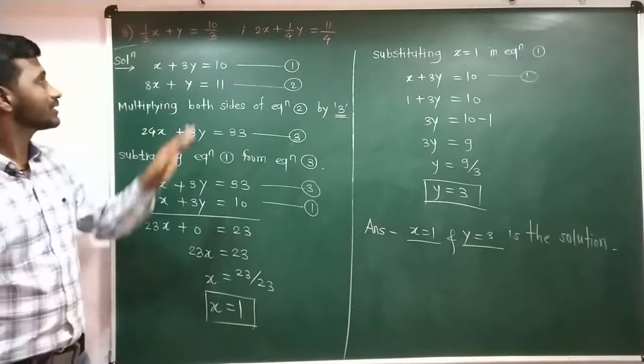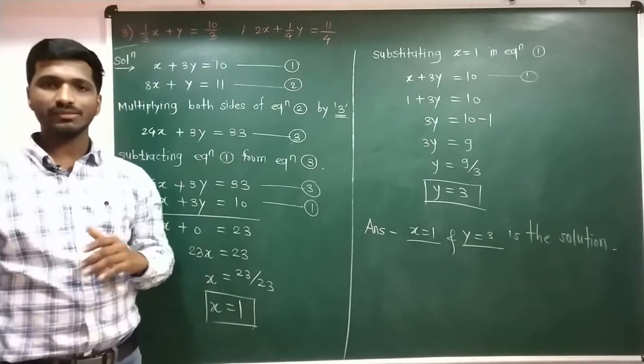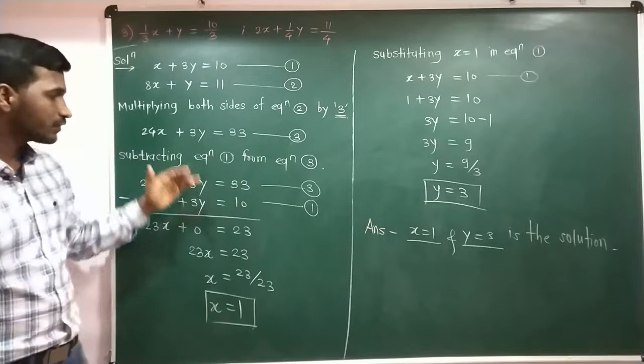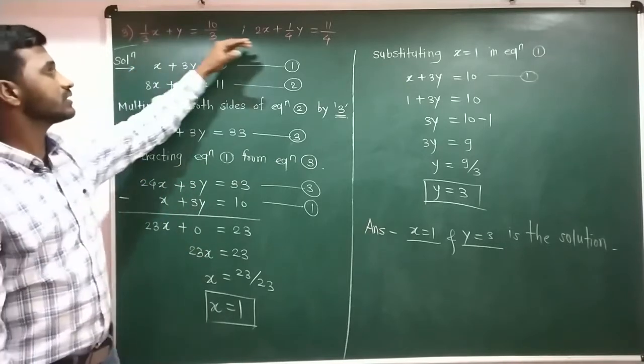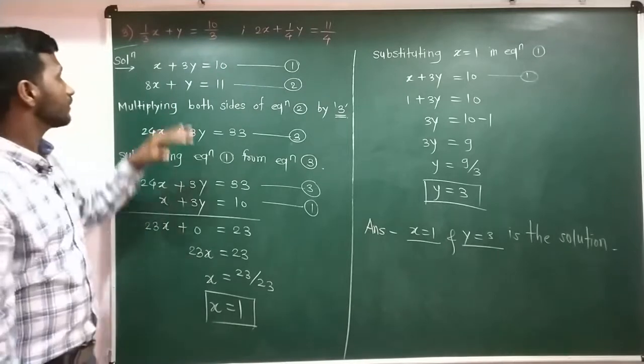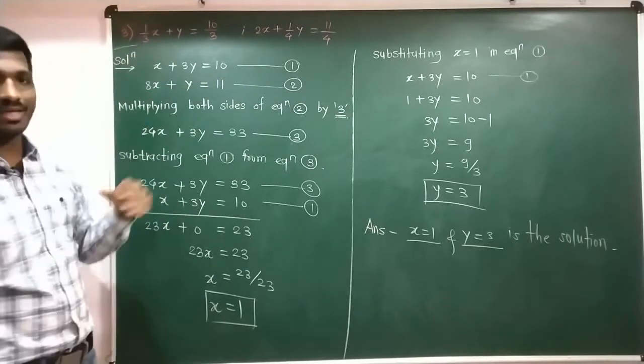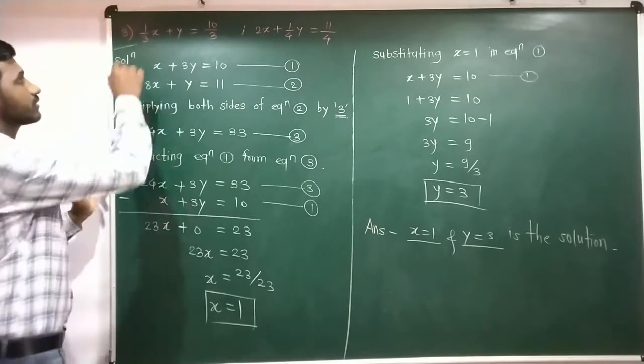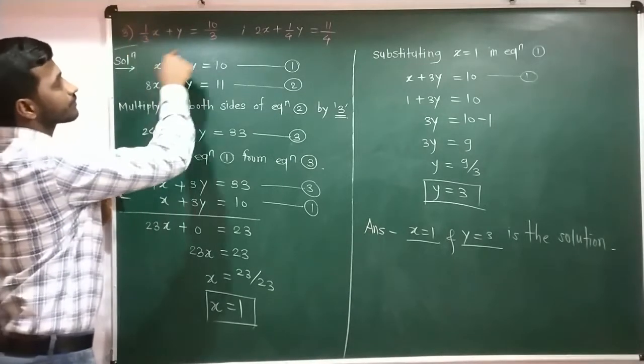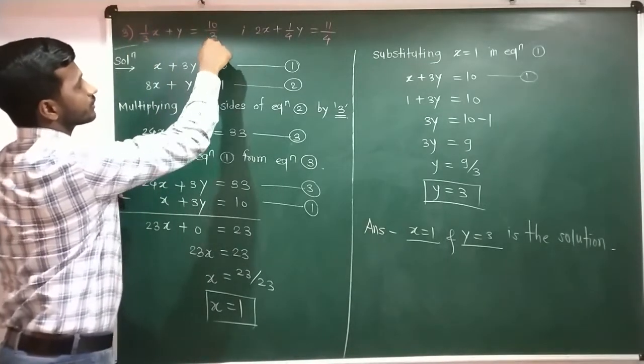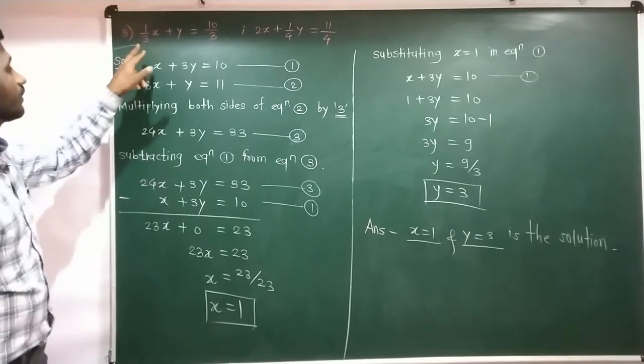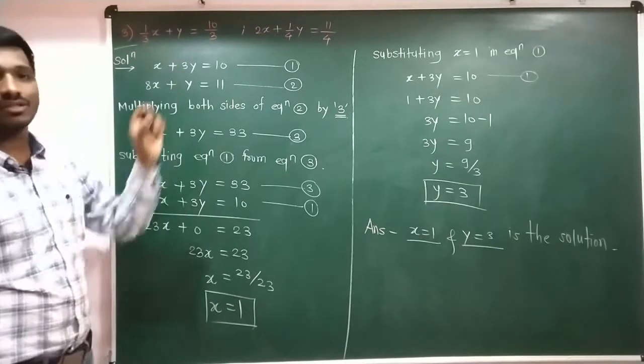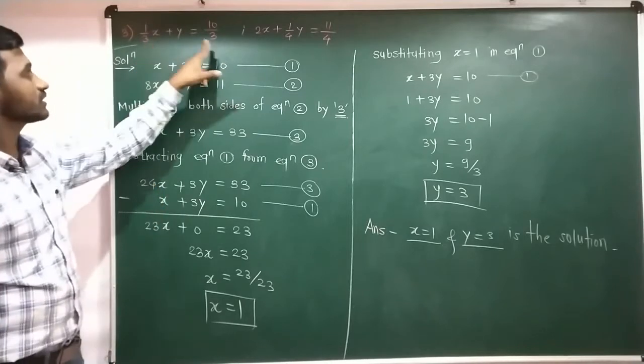When linear equations are used, by the last step, we simplify this equation. First, simplify the equations. We check 1 upon 3, and here the constant is 10 upon 3. If we simplify, then we multiply both sides by 3.